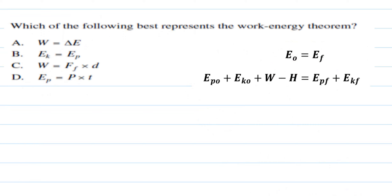Let's take another theory-based question related to the work-energy theorem. The work-energy theorem means energy is conserved: energy at the beginning equals energy at the end. We need to figure out which of the four options best describes the work-energy theorem.